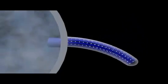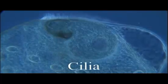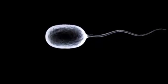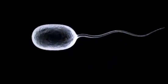Cilia, Latin for eyelash, are short and numerous structures that extend from the cell membrane. Cilia move single-celled organisms such as Paramecium through their environment with a rowing motion. Flagella, meaning whip in Latin, are usually considerably longer than cilia and fewer in number. Flagella move in a wave or whip-like motion. The sperm of most animals and algae rely on flagella for movement, as do a number of single-celled organisms such as euglenoids.